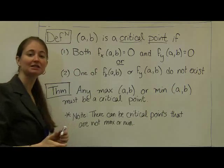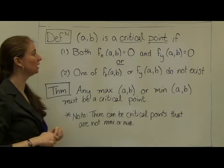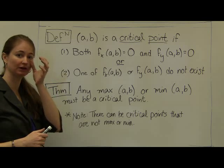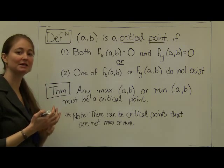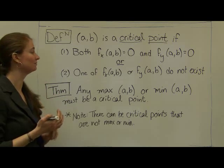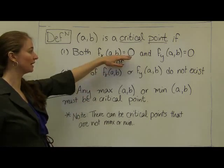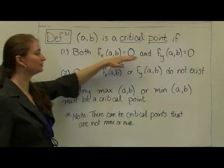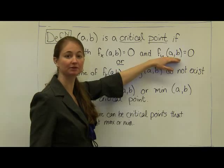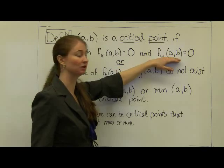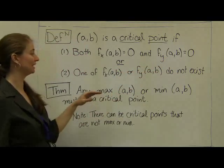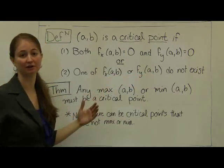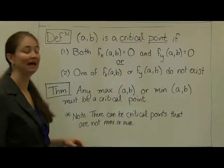The definition of a critical point is a little more complicated for multivariable functions than for single variable functions. We have two different ways a point can be a critical point. The traditional way is that both partial derivatives are equal to zero. Another way is if the partial derivatives are undefined or don't exist at that point.